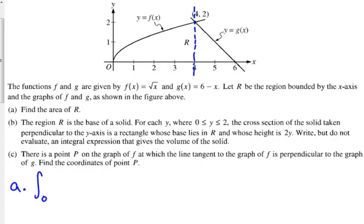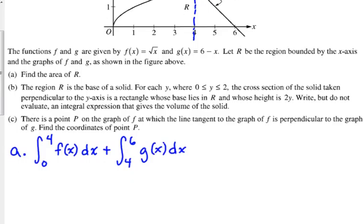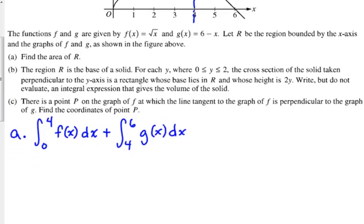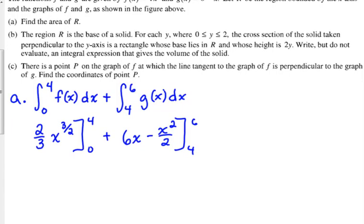The first piece is from 0 to 4 of f of x plus the integral from 4 to 6 of g of x. Now I'm just going to plug in those specific functions and integrate. The antiderivative of the square root of x would be 2 thirds x to the 3 halves. We're evaluating that from 0 to 4 plus the antiderivative of g of x would be 6x minus x squared over 2. That's going to be evaluated from 4 to 6.